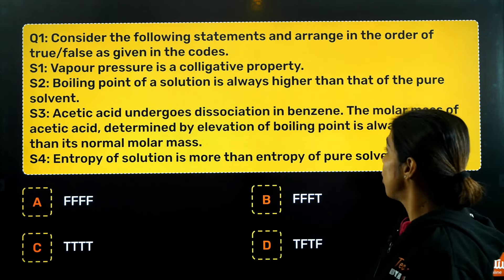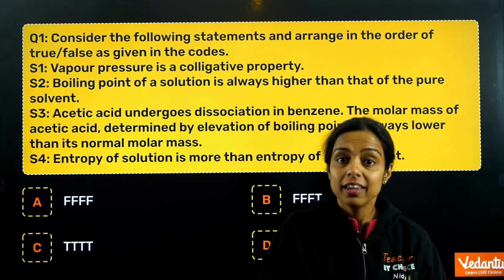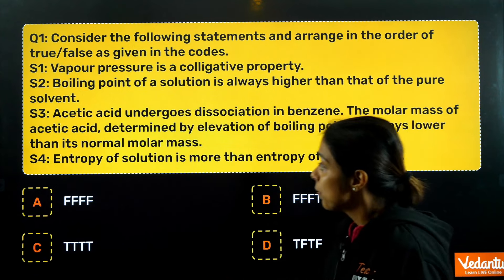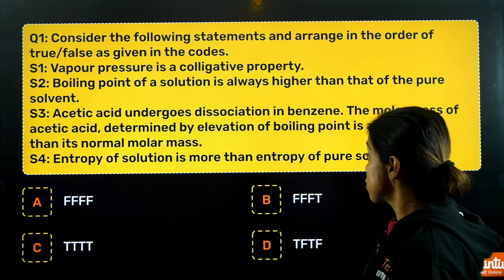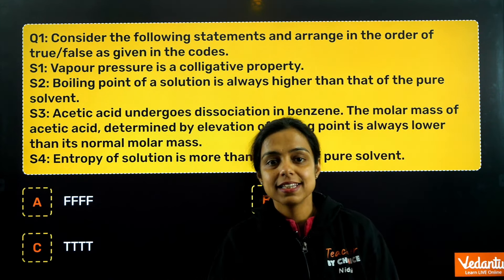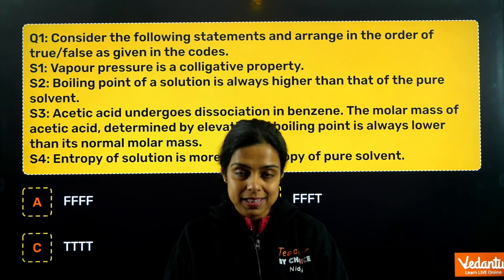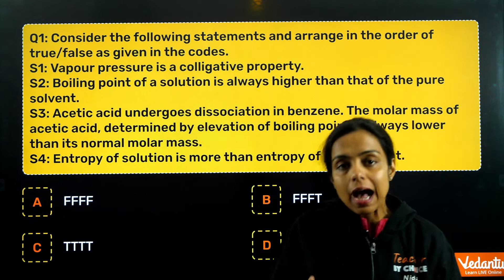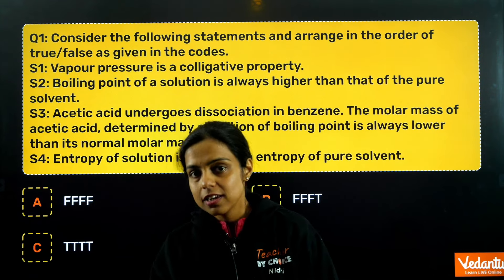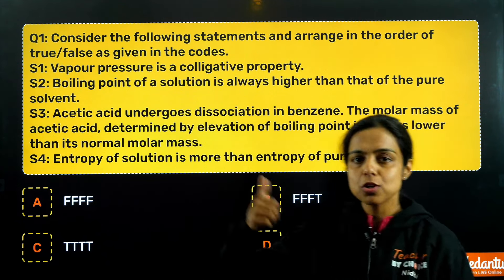Second statement: boiling point of solution is always higher than that of a pure solvent — again false. This is only true if the solute is non-volatile, not always true. Third: acetic acid undergoes dissociation in benzene — false, because acetic acid in benzene undergoes association, not dissociation. In benzene as a solvent, acetic acid molecules undergo association due to intermolecular hydrogen bonding. If the solvent is water, then acetic acid undergoes dissociation.